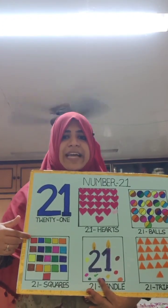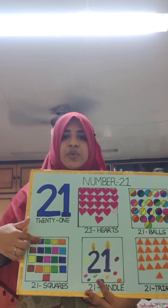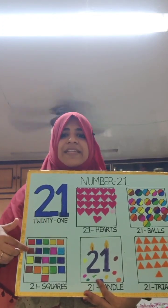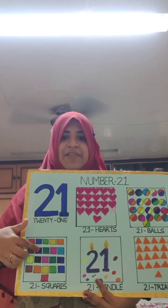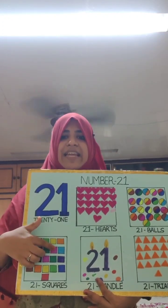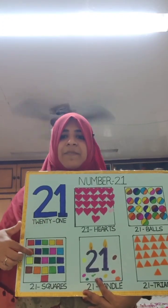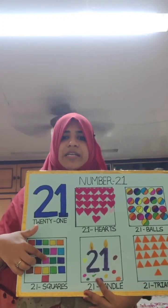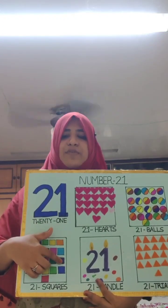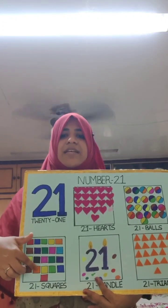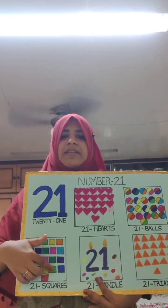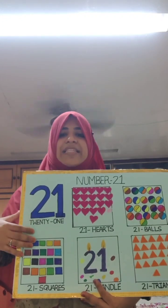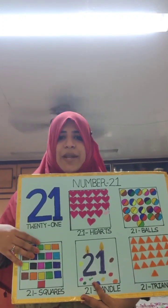Let us start. 1, 2, 3, 4, 5, 6, 7, 8, 9, 10, 11, 12, 13, 14, 15, 16, 17, 18, 19, 20, 21. These are 21 squares.